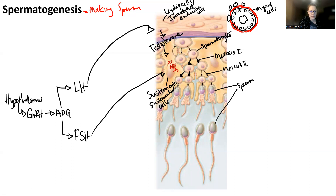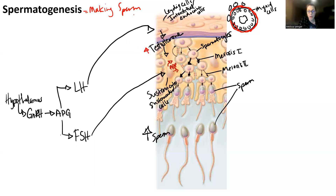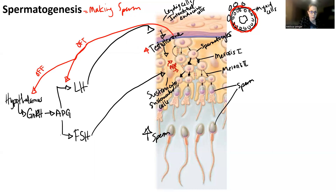As sperm count increases, what essentially happens is two negative feedback mechanisms. As sperm count increases, testosterone levels will also be high. So testosterone feeds back to the anterior pituitary gland and to the hypothalamus, turning off those systems so that testosterone levels go back down and sperm count goes back down. This is negative feedback.